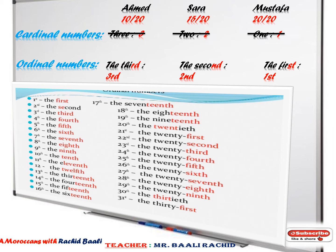We have the 1st, the 2nd, the 3rd, the 4th, the 5th, the 6th, the 7th, the 8th, the 9th, the 10th, the 11th, the 12th, the 13th, the 14th, the 15th, the 16th, the 17th, the 18th, the 19th, the 20th, the 21st, the 22nd, the 23rd, the 24th, the 25th, the 26th, the 27th, the 28th, the 29th, the 30th, and the 31st.